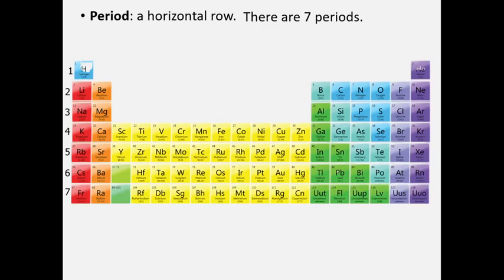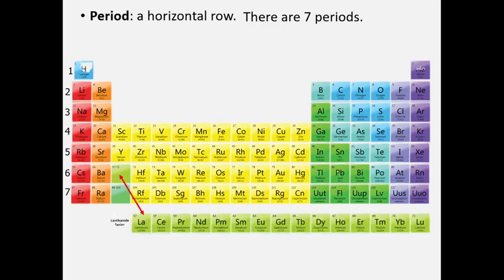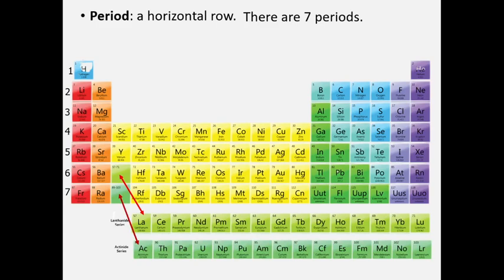In period number 6, where atomic number starts from 57 to 71, we use a series of elements which we call lanthanides. The lanthanides are placed in this pocket below with layering in different groups. In period number 7, where atomic number starts from 89 to 103, there is another series called actinides. We will discuss lanthanides and actinides in the future.